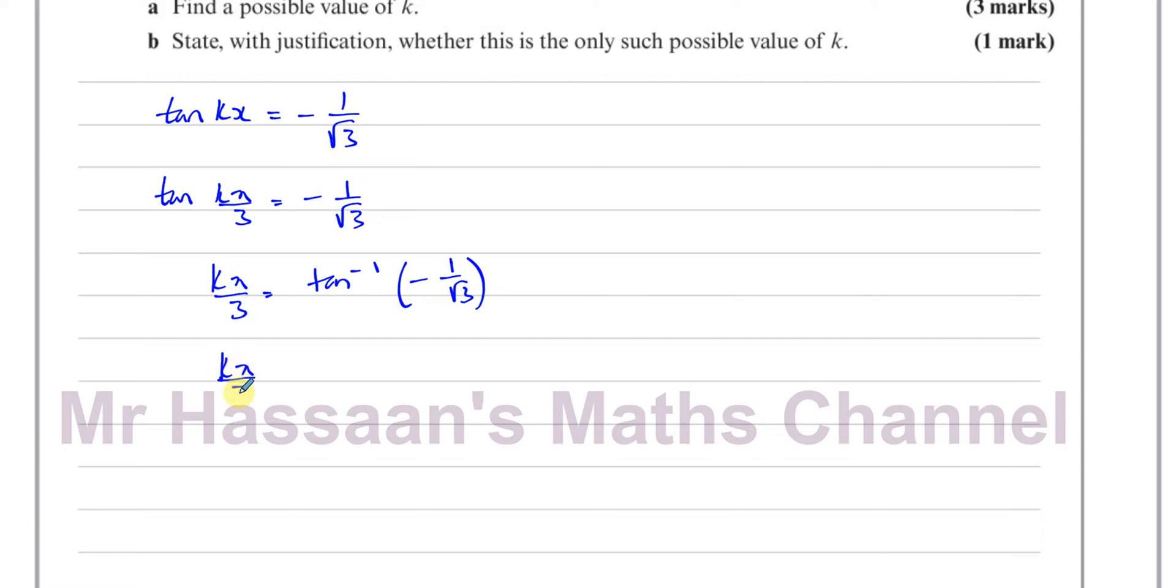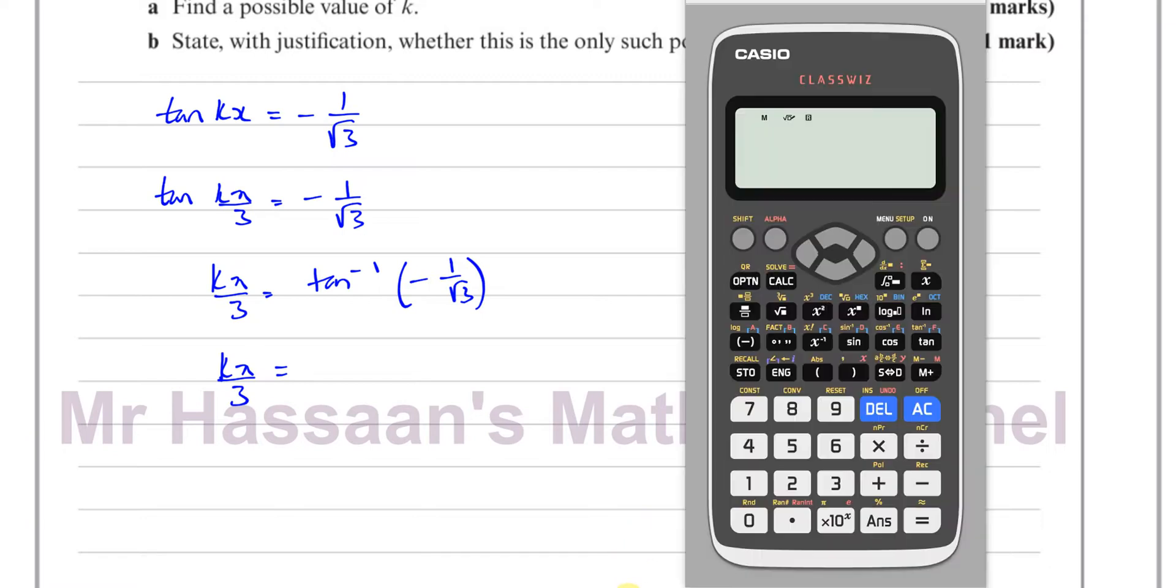So tan(k π/3) equals... if you find the calculator answer, the principal solution for that is going to be... make sure we're in radian mode. So inverse tan of negative 1 over root 3. That's actually root 3 over 3 in simplified form. That's going to give us negative π over 6.